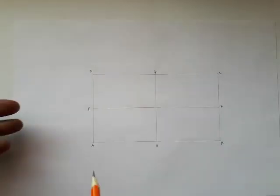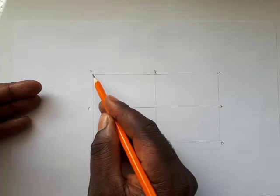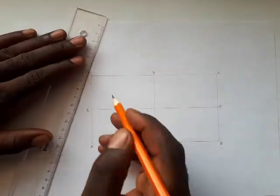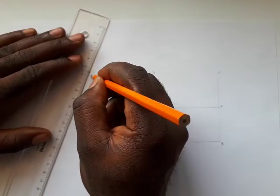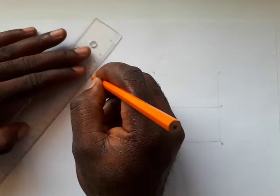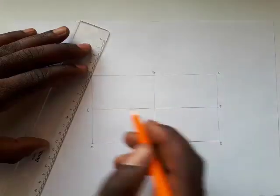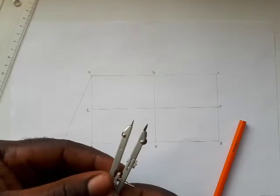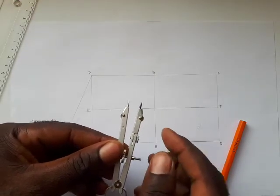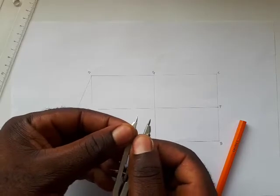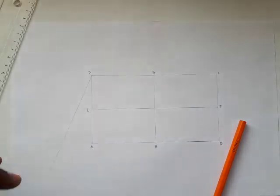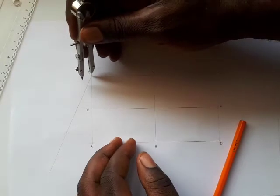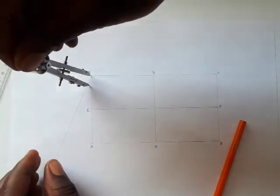Next, divide line AD into 8 equal parts. Draw a line at an angle to line AD from D — any angle of your choice. Draw a thin line, then use your pair of compasses with any reasonable radius. Step off 8 equal divisions: needle on D, step off 8 equal divisions — that's 1, 2, 3, 4, 5, 6, 7, and 8.